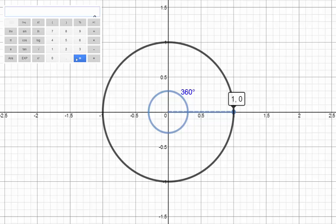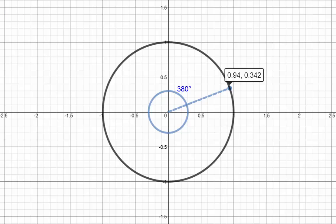To work out something like cos 380 degrees, we could just calculate cos 20 degrees, because it reaches the same point on the circumference. For that reason, we generally just consider angles between 0 and 360 degrees, because we can just subtract 360 degrees until we get to an angle in this range.